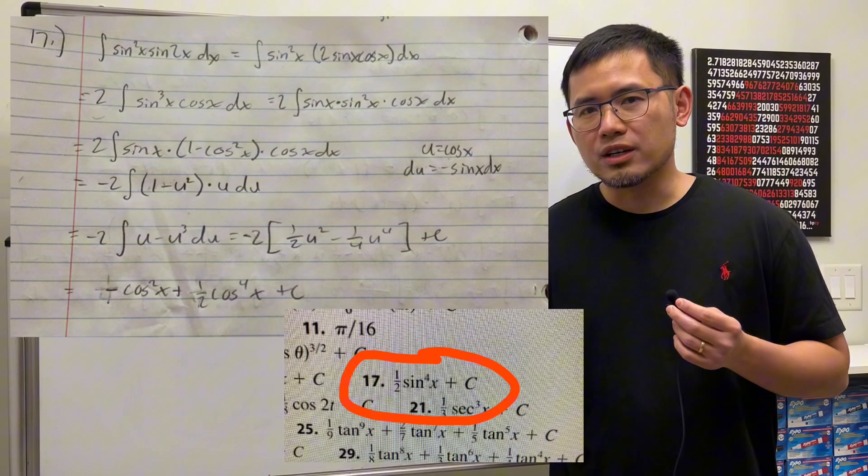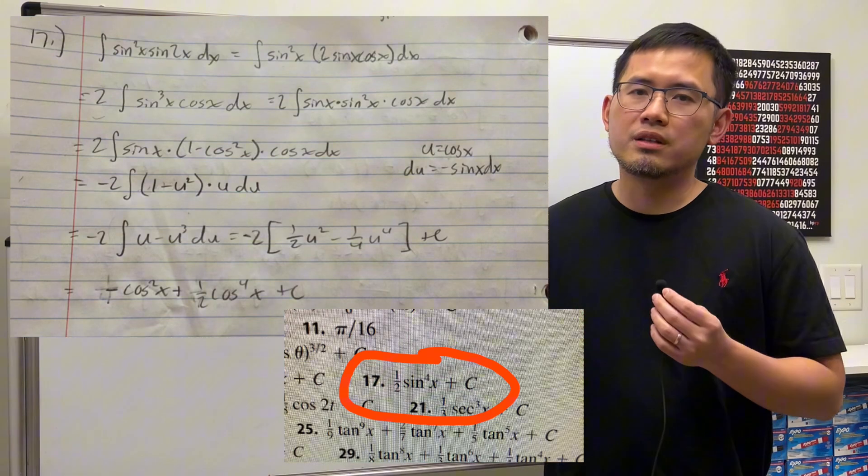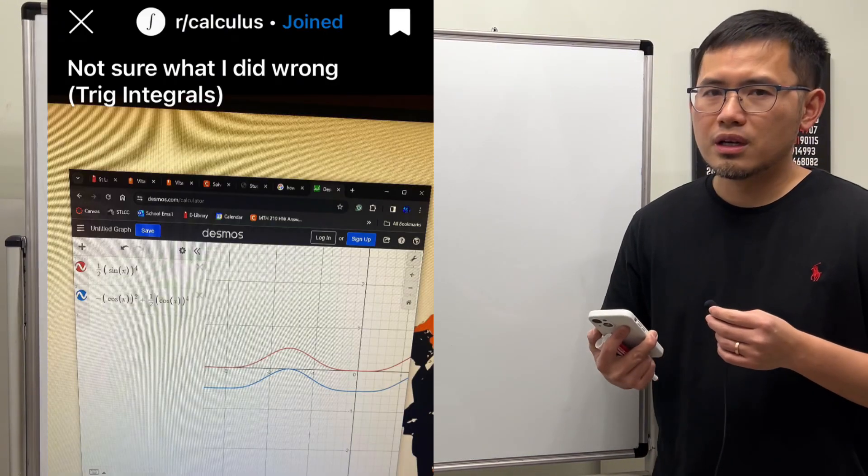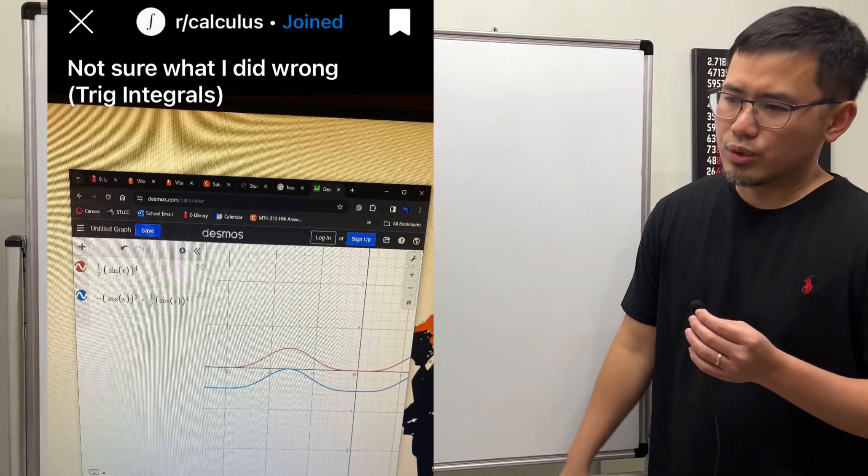a constant from the answer in the back of the book. So if you look at your attached picture, you see that the two graphs are just off by a vertical shift. So your answer is totally okay.